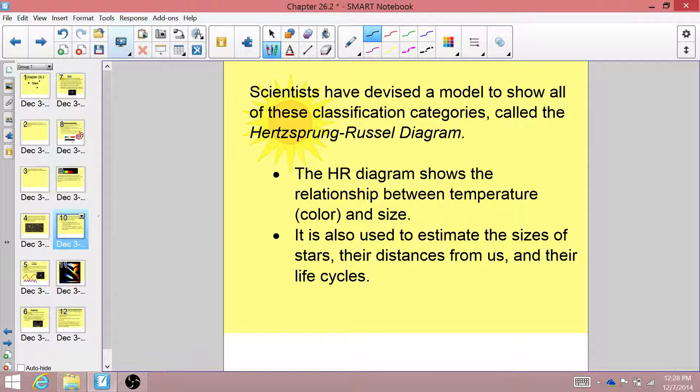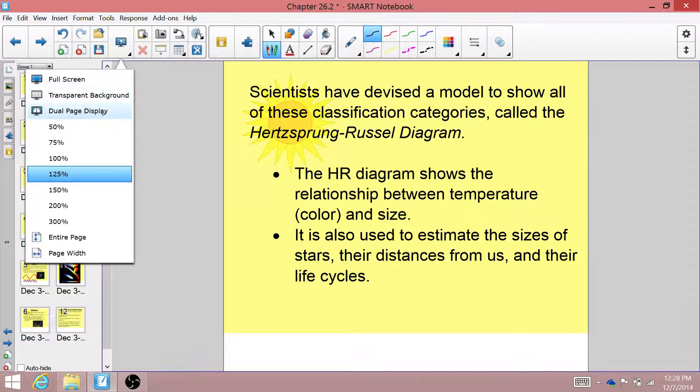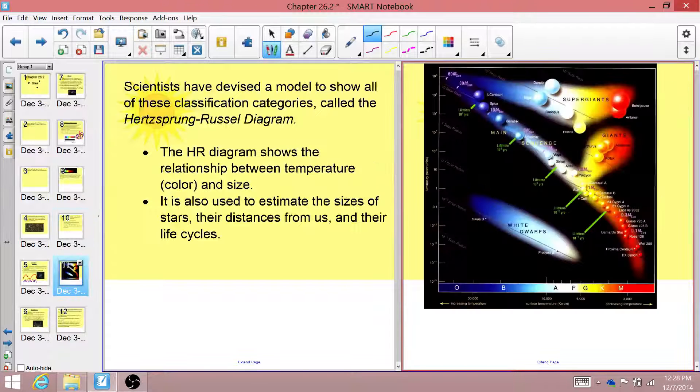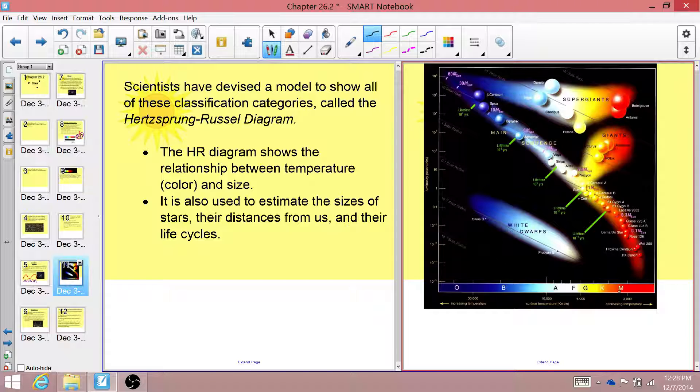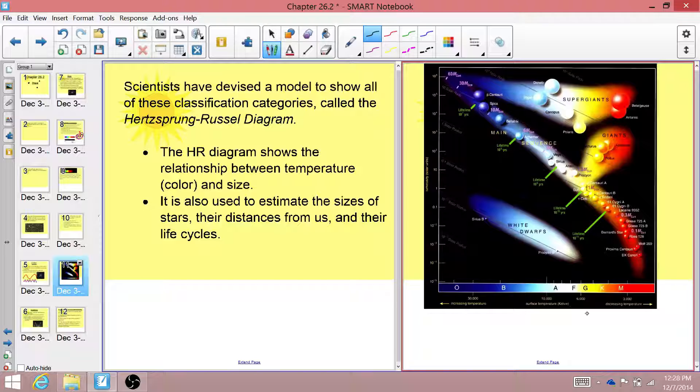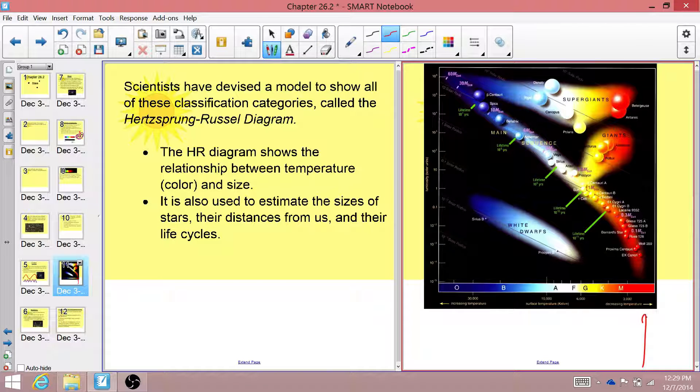So let's take a look at this HR diagram. The HR diagram looks something like this. On the x-axis, we have temperature. And you can see it actually runs in the opposite direction of what you would think. The low temperature, which is red, is way over on the right. And the high temperature, which is blue and purple, is way over on the left.